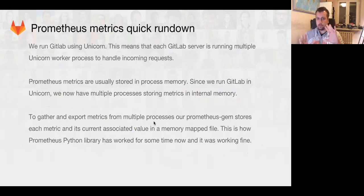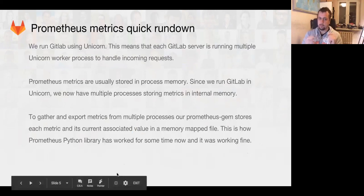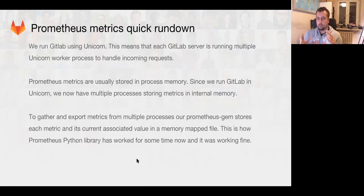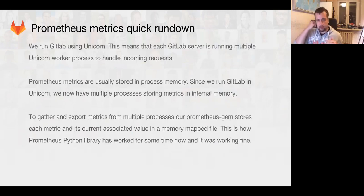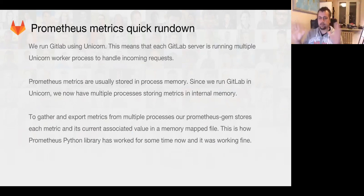To give a quick rundown: we run our Ruby processes, like GitLab, in a multiprocess setup using Unicorn. On each server, we have multiple processes each handling all the requests. We want to gather metrics from all those processes and display them for the Prometheus server to scrape. To do this, we save all the metrics in a file on the filesystem, preferably a memory-backed filesystem like tmpfs so it's faster. The process handling the metrics collection request then processes all the files and sends the reply to the client.